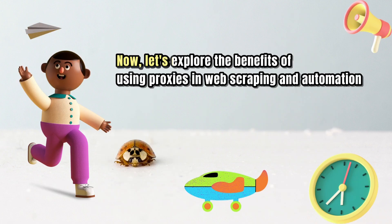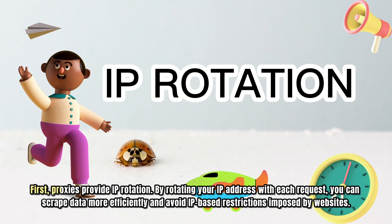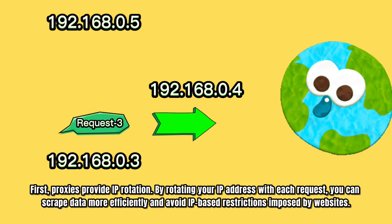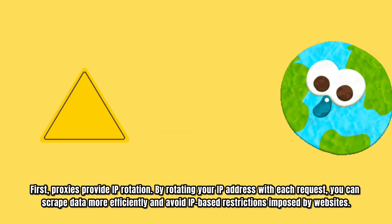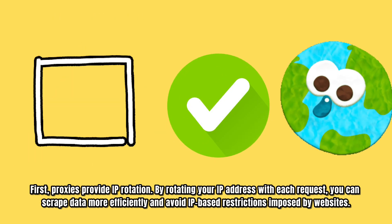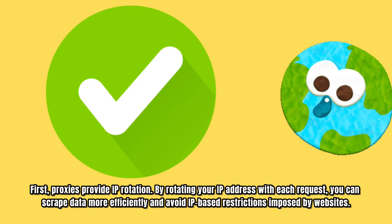Now, let's explore the benefits of using proxies in web scraping and automation. First, proxies provide IP rotation. By rotating your IP address with each request, you can scrape data more efficiently and avoid IP-based restrictions imposed by websites.